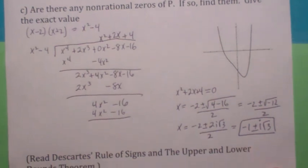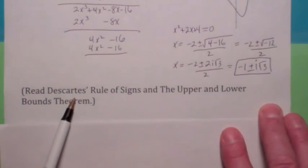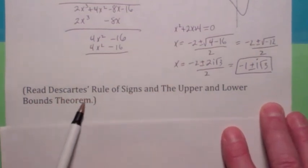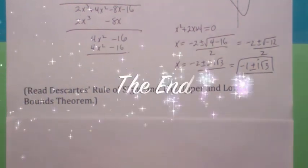Anyway, I just want to mention this last thing. I don't usually talk much about Descartes' rule of sign. Your teacher might, if you're in a different class, and the upper and lower bounds there. Those are in section 3.3, but I don't really talk about it much. But you might want to read that for your other class. Talk to you later. Bye-bye.